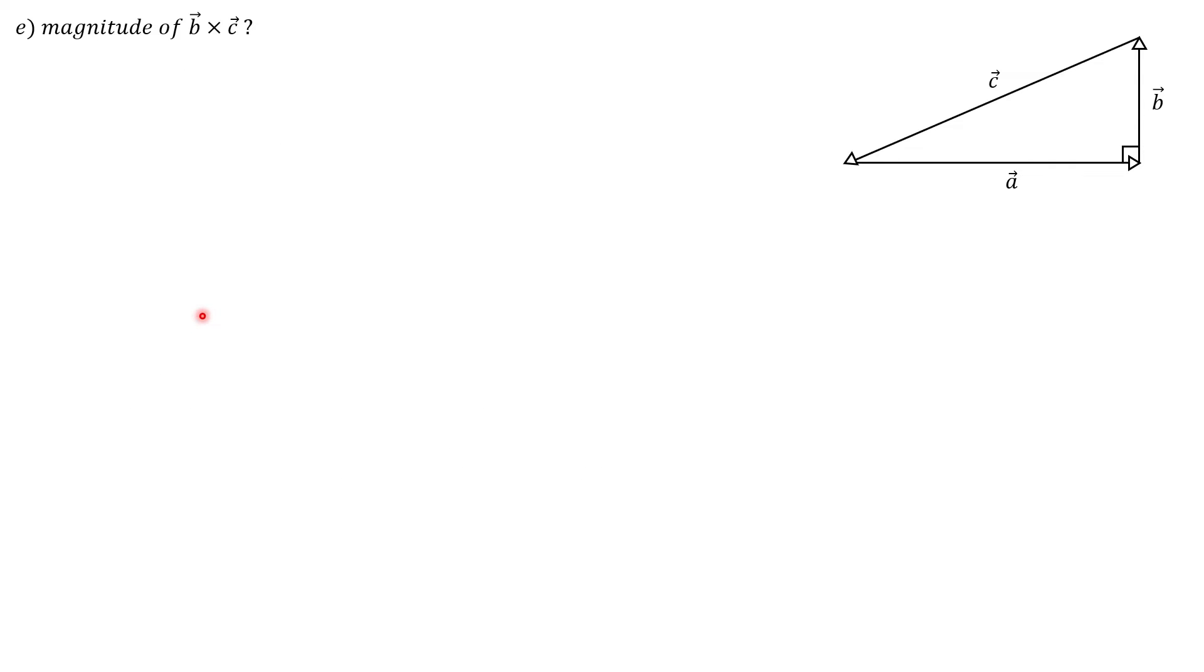And now for part E, we have the last combination of vectors, the magnitude of B cross C. Now once again, we can write it in that form that we did in part A. But again, we have the ability to write this vector C in terms of A and B. So we can go ahead and do that the same way we did in part C. And so we'll go ahead and toss in that minus B minus A. Again, we can expand this out: B cross negative B, plus B cross negative A. Again, vector with itself is just zero. So we're left with B cross negative A.